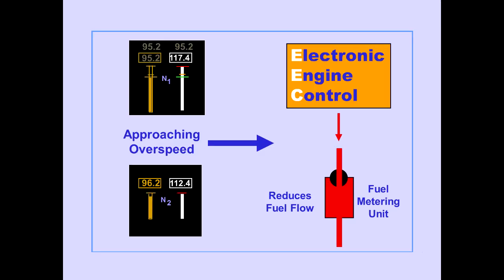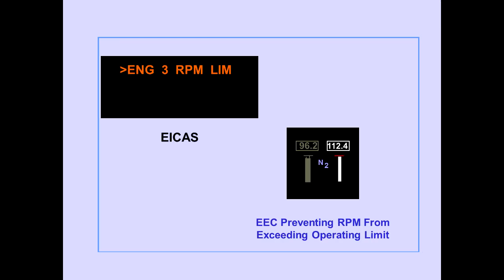The EEC automatically prevents rotor overspeed. If N1 or N2 RPM approaches overspeed, the EEC commands the fuel metering unit to reduce fuel flow to prevent overspeed. The ICAS advisory message 'engine RPM limit' is displayed when N2 RPM reaches the operating limit, indicating the EEC is preventing RPM from exceeding the operating limit even though the thrust lever is commanding more thrust.